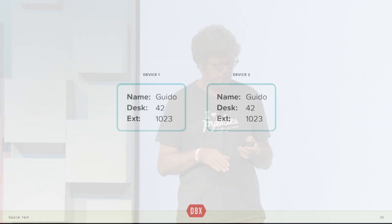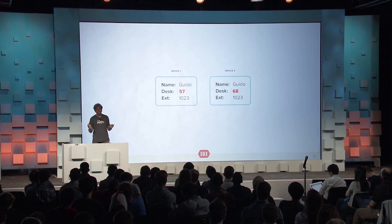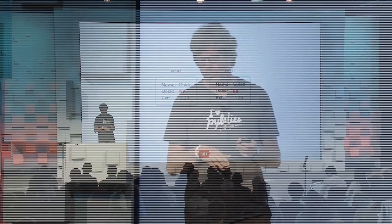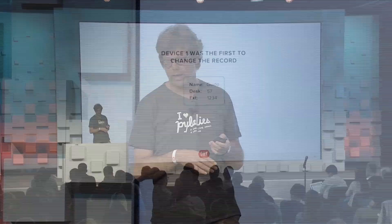Finally, let's suppose two slightly miscoordinated office managers have different ideas of where I'm going to move. I get moved to desk 57 on one device, and moved to desk 68 on another. What happens? In this case only, the conflict resolution rules are invoked. With no particular specification for the desk field, the first device that hits the server will win — and that happens to be device one — so I move to desk 57. We could have used different resolution orders, like adding the desk numbers, which would have made no sense, or used the one who hit the server last as the winner.